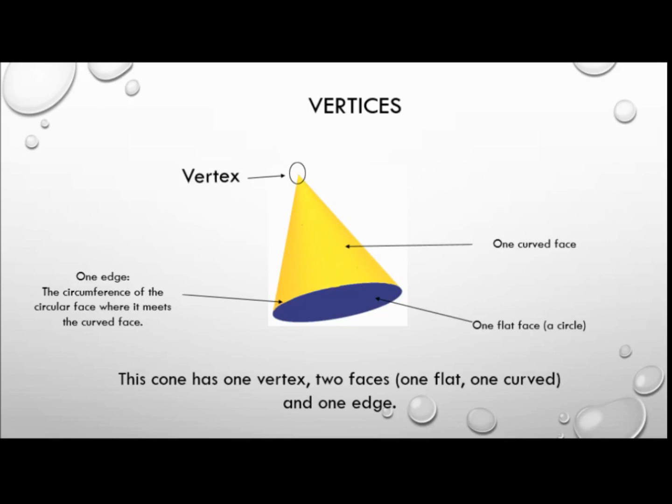It has two faces, one of which is flat and the other one is curved, and it has one edge. That edge is the circle or the circular face that meets the curved face of the cone, and that creates a line which would be the circumference of that circle, and that is the edge.